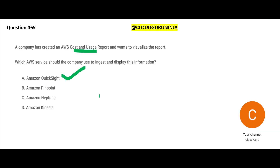Amazon Neptune is a graph database used for recommendation engines — for example, on Flipkart it shows 'people who bought these two products also bought these.' It's not relevant here. Amazon Kinesis — always remember, if you don't see the words 'real time' in the question, don't use Kinesis. There is no 'real time' in this question, so no Kinesis.